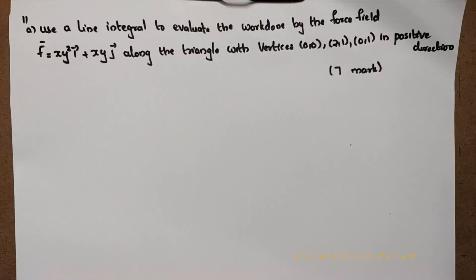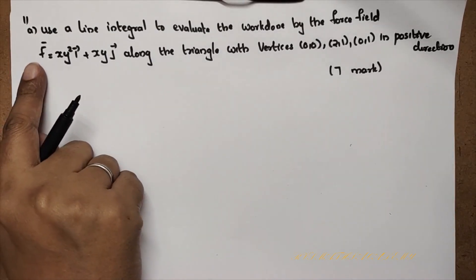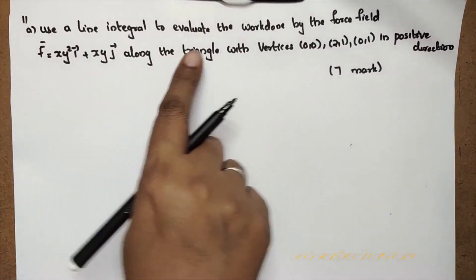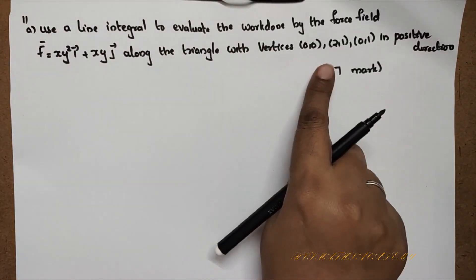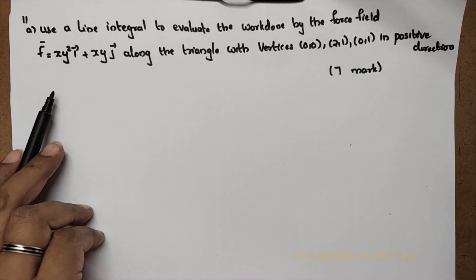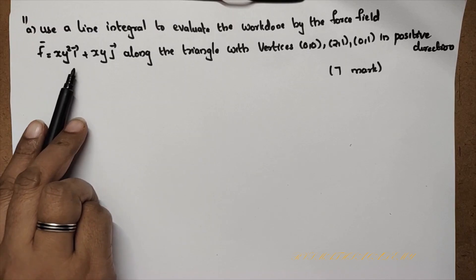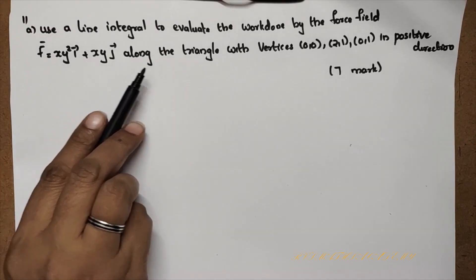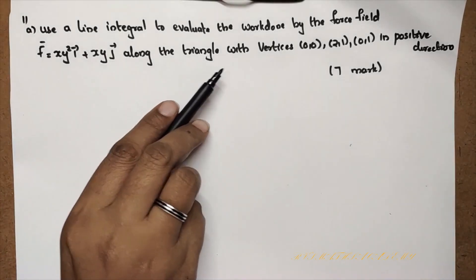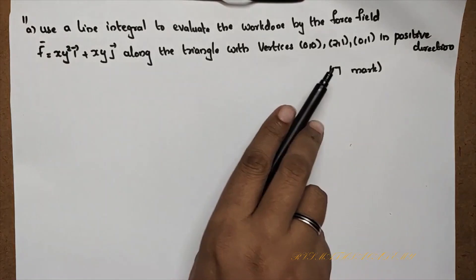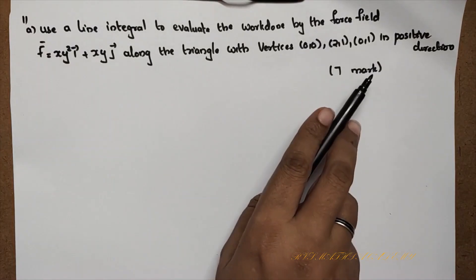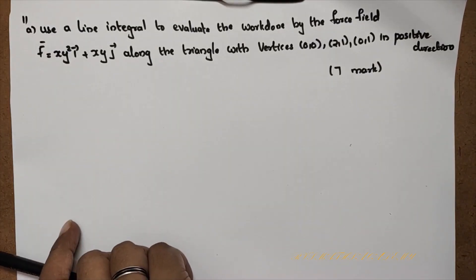Let's go to the next question, Part B. Use line integral to evaluate the work done by the force field: vector F is equal to xy² i plus xy j, along the triangle with vertices (0,0), (2,1), (0,1) in positive direction.